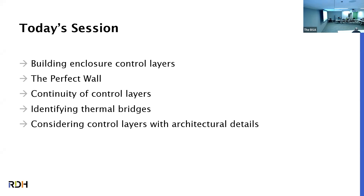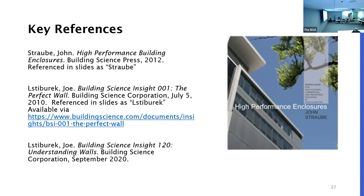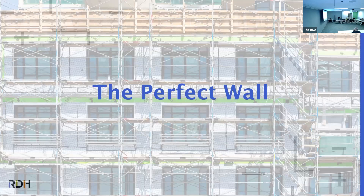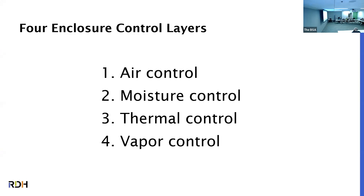Now that Luke has talked about the science behind building science, I want to go into the control layers within our walls, the perfect wall in our opinion, and then maintaining continuity of those control layers, identifying thermal bridges, and where to look for those control layers in your architectural details and drawing reviews. We've got four enclosure control layers: air, moisture, thermal, and vapor.